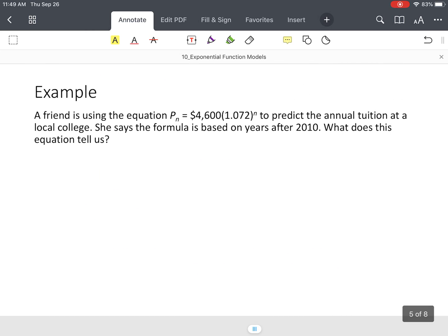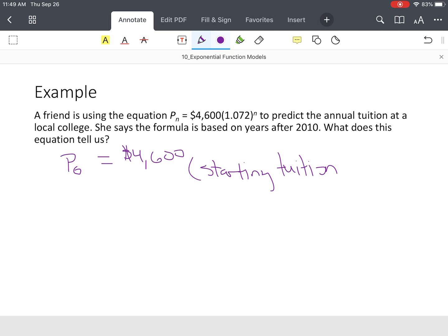All right, so now, let's say they gave us a formula, and we had to interpret. We didn't have to solve anything. We just had to interpret what was given. So, in this particular case, we can ask a couple different questions. What's the initial value? So, we use a model that's being used to predict annual tuition prices at a local college. So, the initial tuition is $4,600. So, that's their starting tuition in the year 2010.